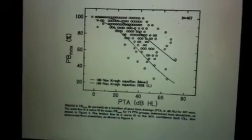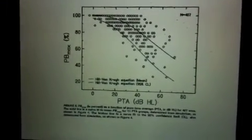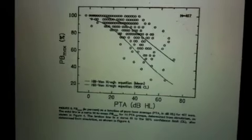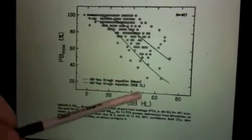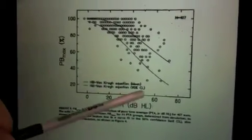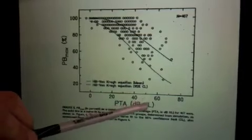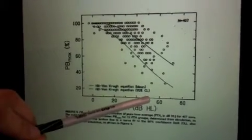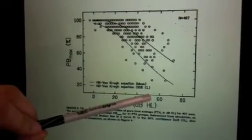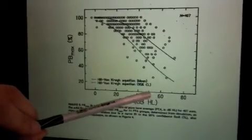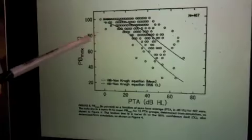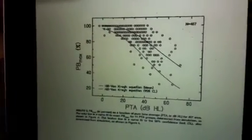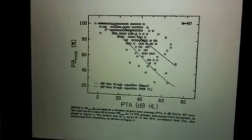Remember again, with a conductive hearing loss, once you overcome the attenuation loss from the conductive component, the pbmax should be near perfect. So in an individual with a flat, moderate sensorineural hearing loss with a severity of moderate severity, 50 dB HL would correspond there to a pbmax of 70%.